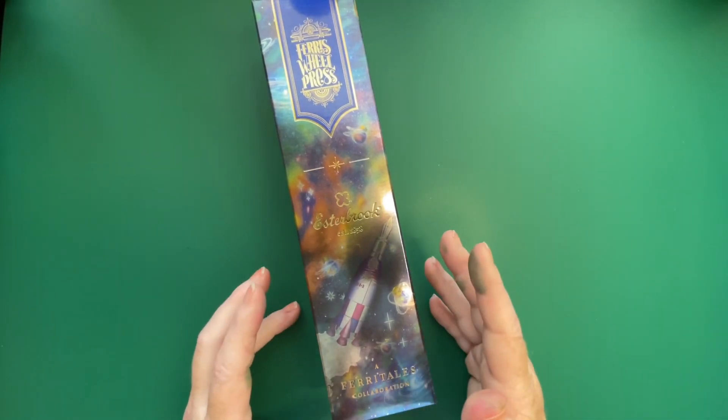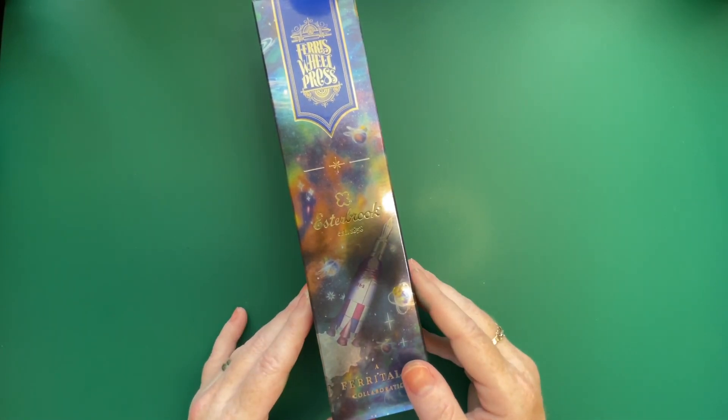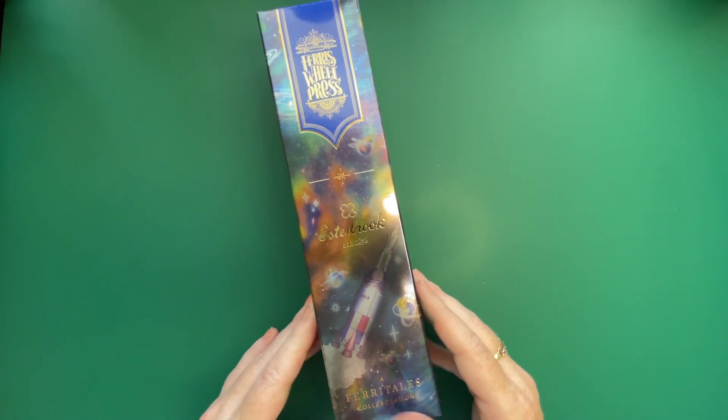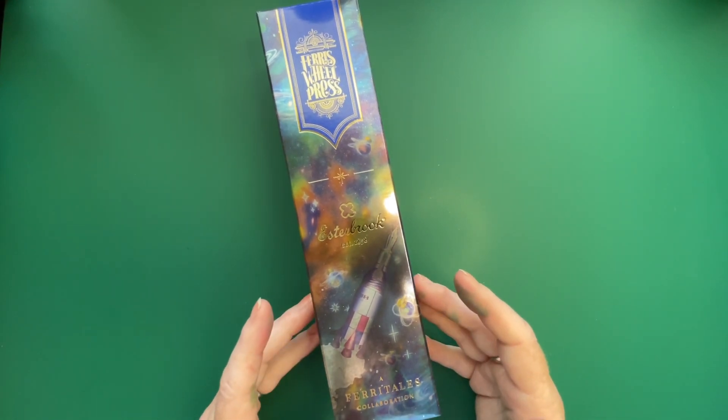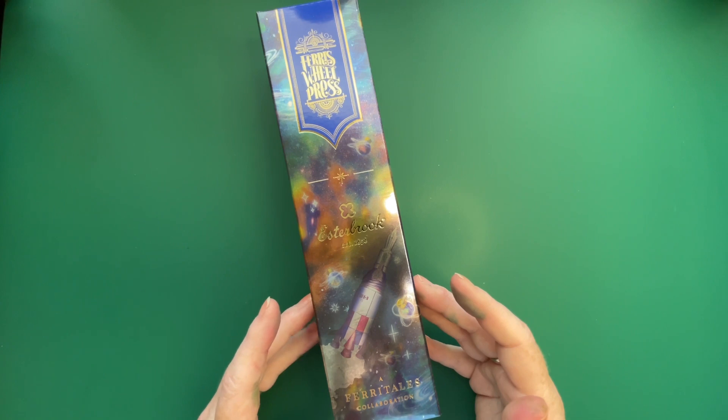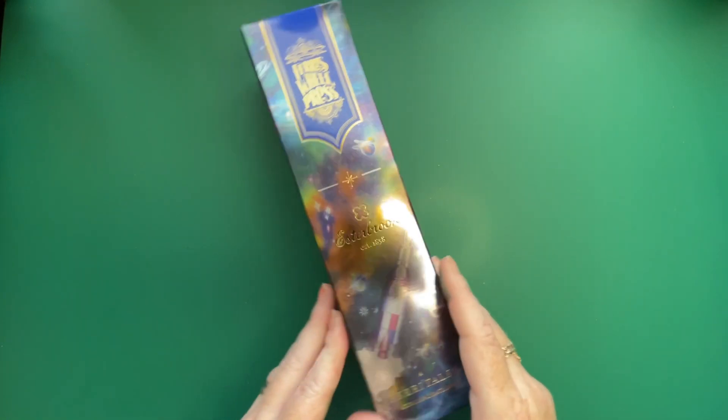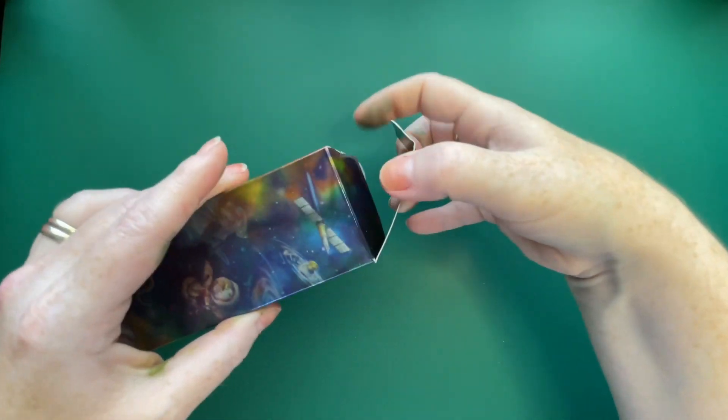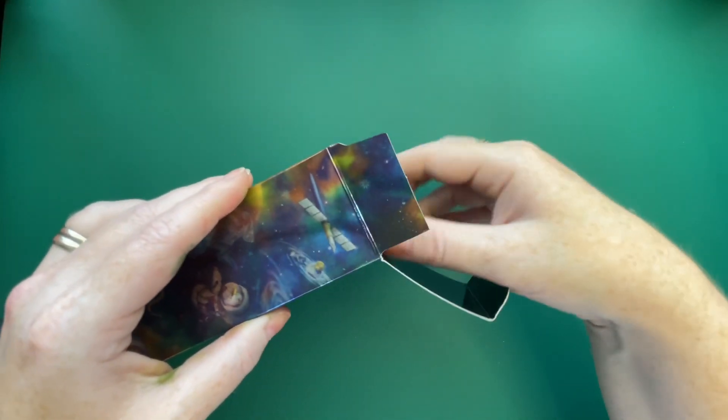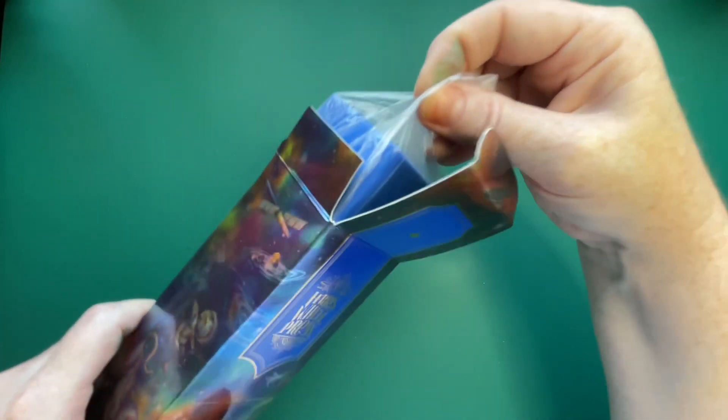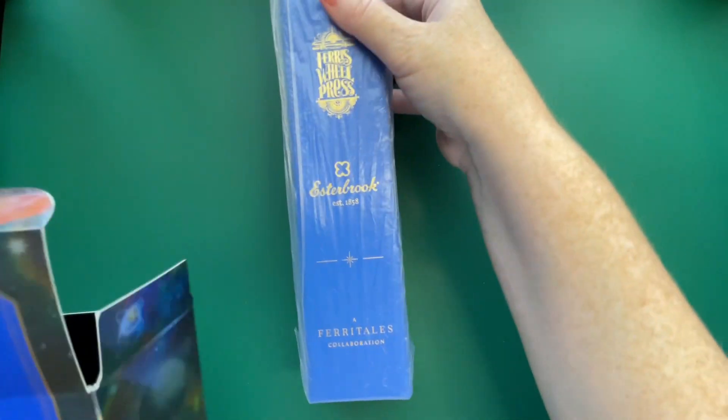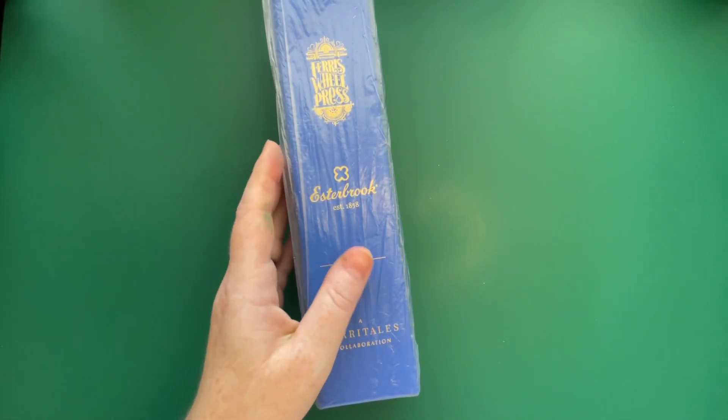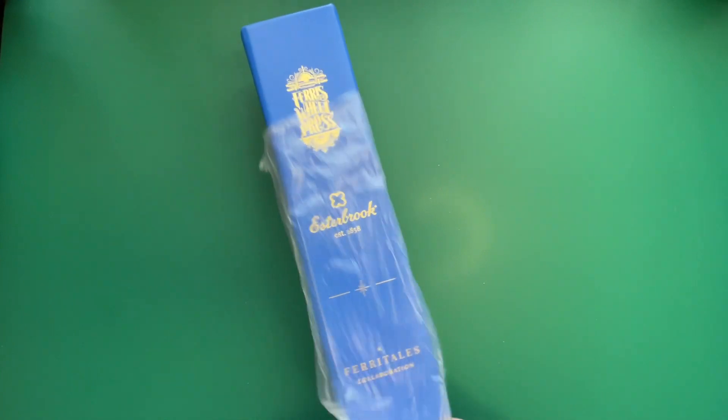All right, so here it is. I am really excited to show you the Ferris Wheel Press Estherbrook collaboration pen called Nebulous Plume. It was a collaboration based on a space theme.